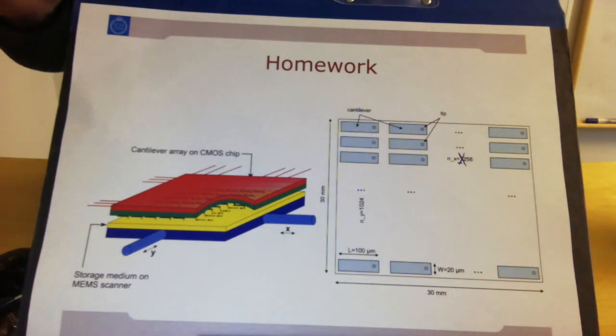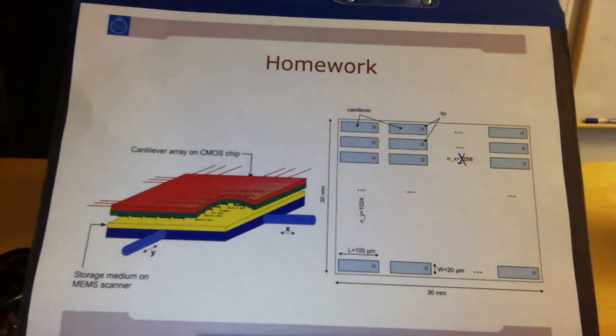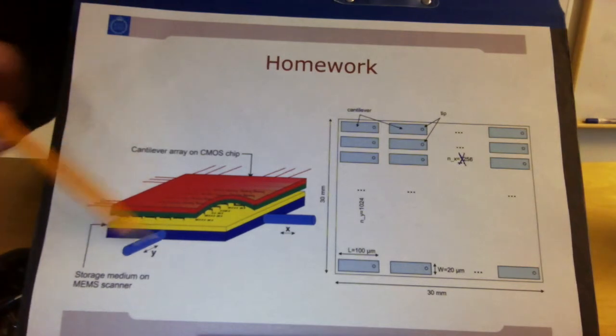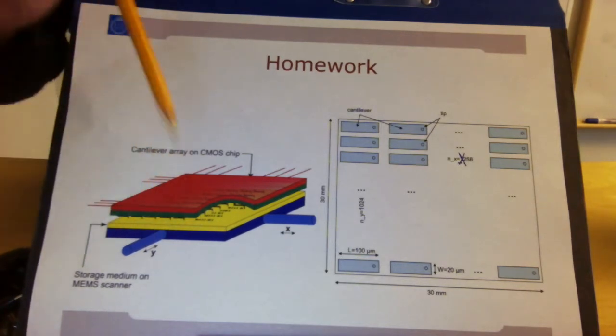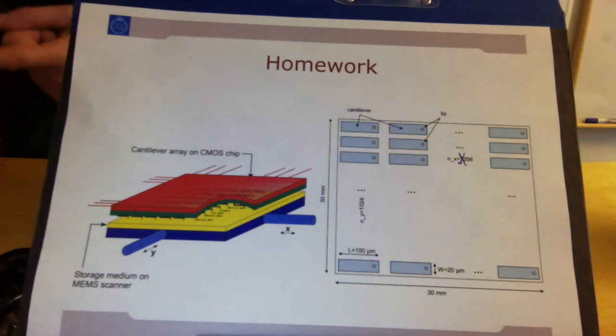So these are three different types of actions that you are supposed to be able to do with your system. For each of the actions, the question is: what is the maximum stroke, the maximum displacement needed, and the positioning precision? How precise do I need to be able to move the thing? And the second question is: how fast do I need to scan and how fast do I need to be able to move this up and down during reading or writing?